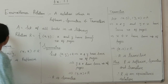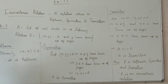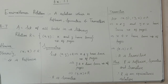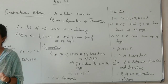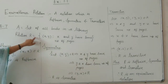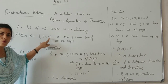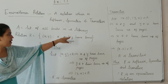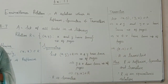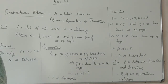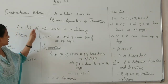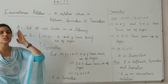So for question number 7: show that the relation R in a set A of books in the library of a college, given by R = {(X, Y) | X and Y have the same number of pages}, is an equivalence relation. Now students, here the set A is the set of all books in the library, and X and Y have the same number of pages.